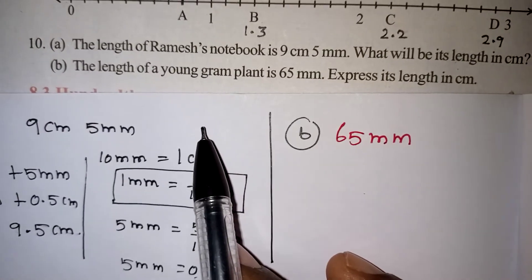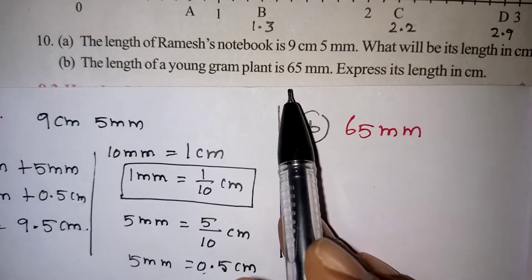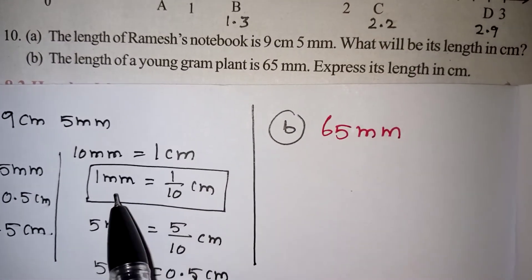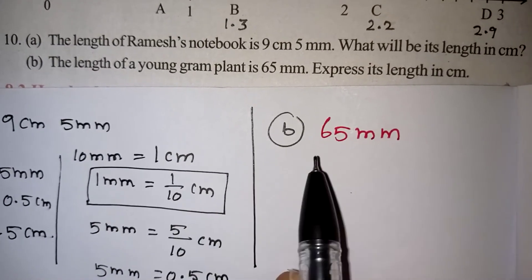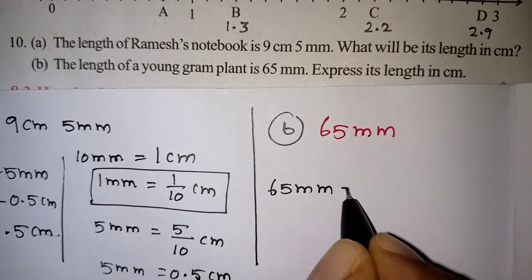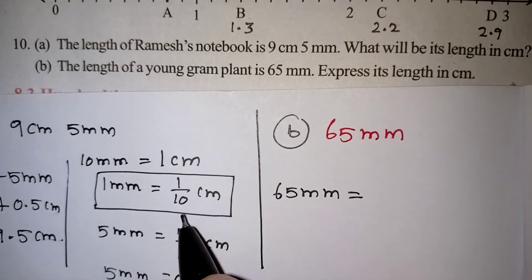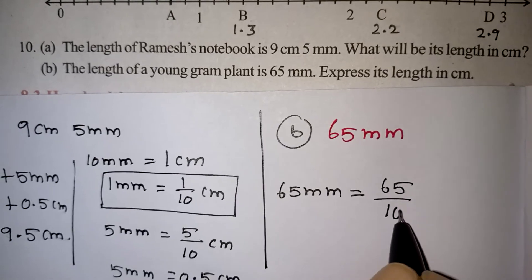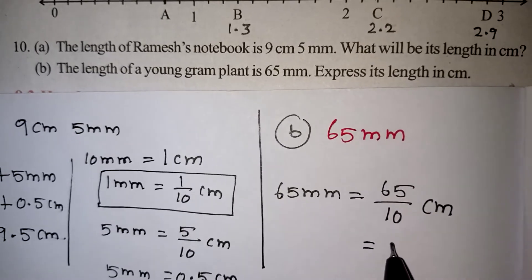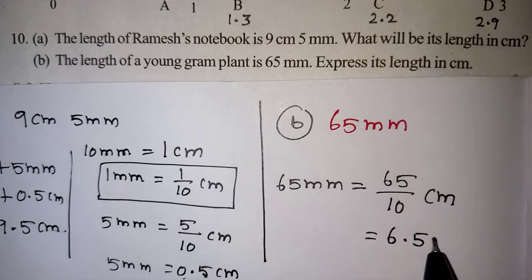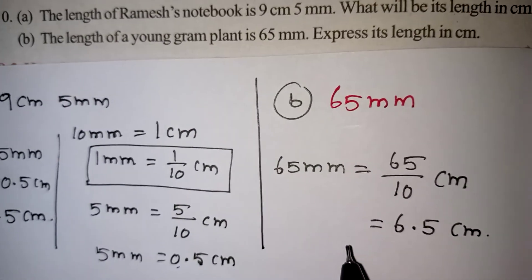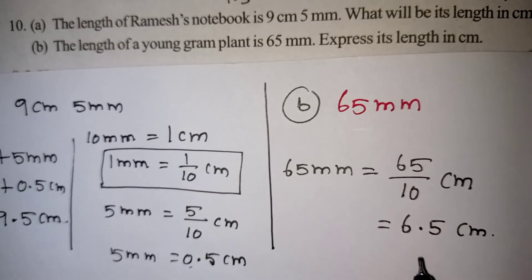B question: The length of a young gram plant is 65 mm. Express its length in cm. We know that 1 mm equals 1 by 10 cm. So 65 mm equals 65 by 10 cm. Dividing by 10 will give you 1 decimal point. So 6.5 cm is your correct answer. The young gram plant is 6.5 cm.